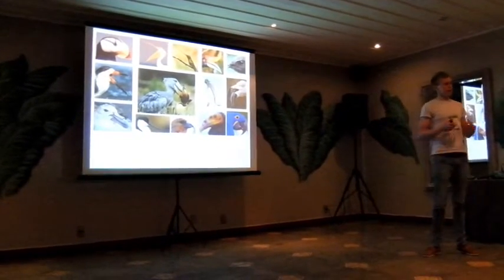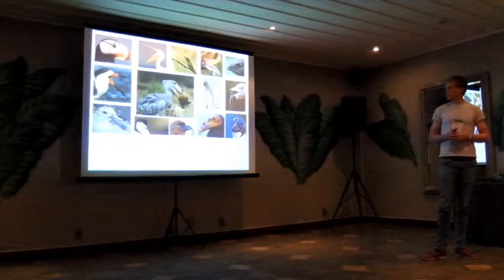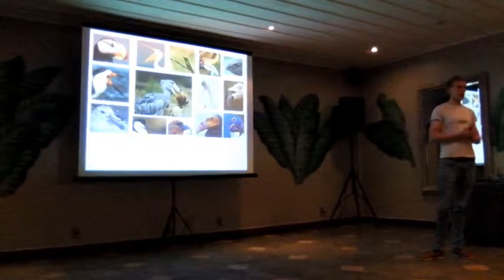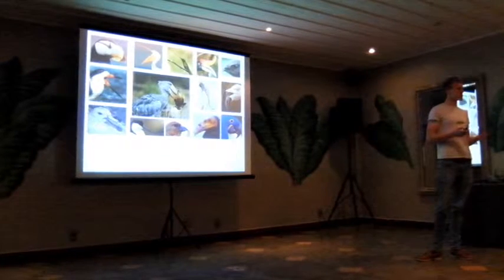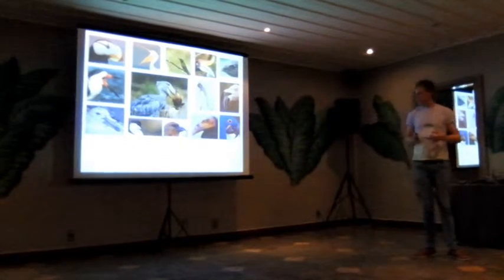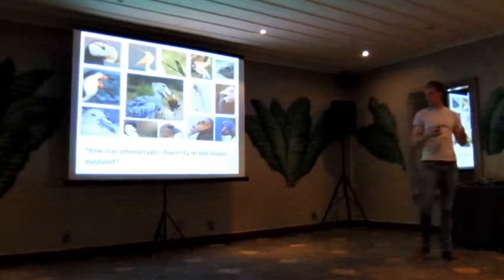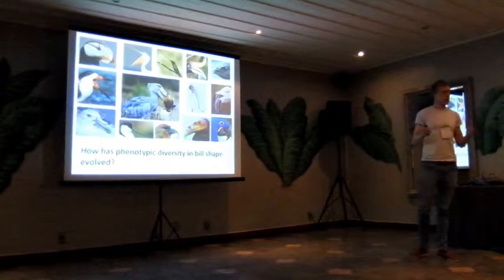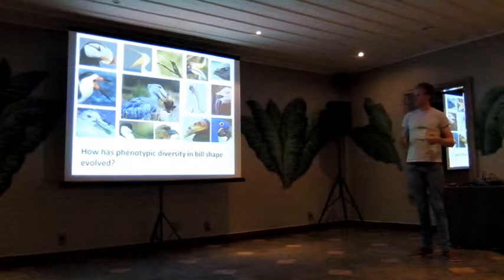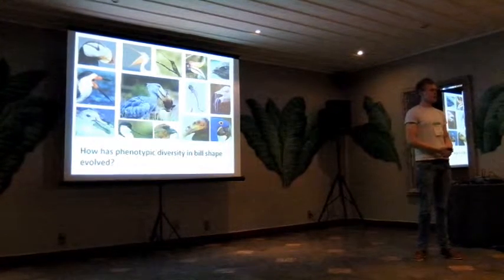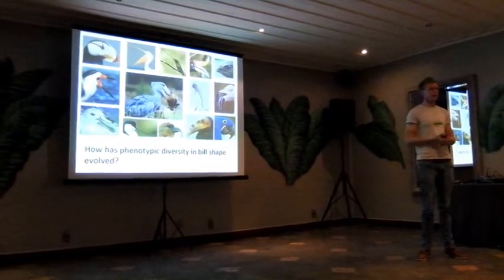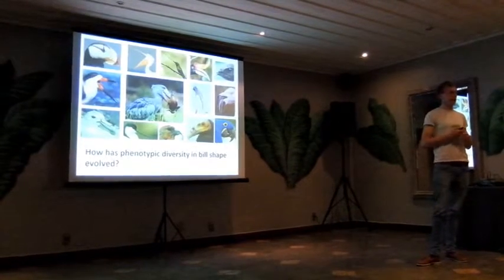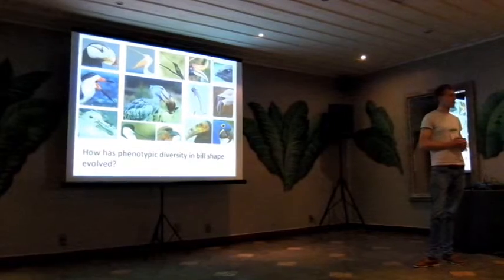I think that many of us are quite familiar with the idea of the bill as a hugely flexible tool used by birds to exploit a wide range of ecological resources. However, what's less clear is exactly how this phenotypic diversity has evolved — in particular, is it a problem of simply gradual divergence over time, or has there been a more complex process of frequent phenotypic jumps and shifts in evolutionary rate which has given rise to this diversity?